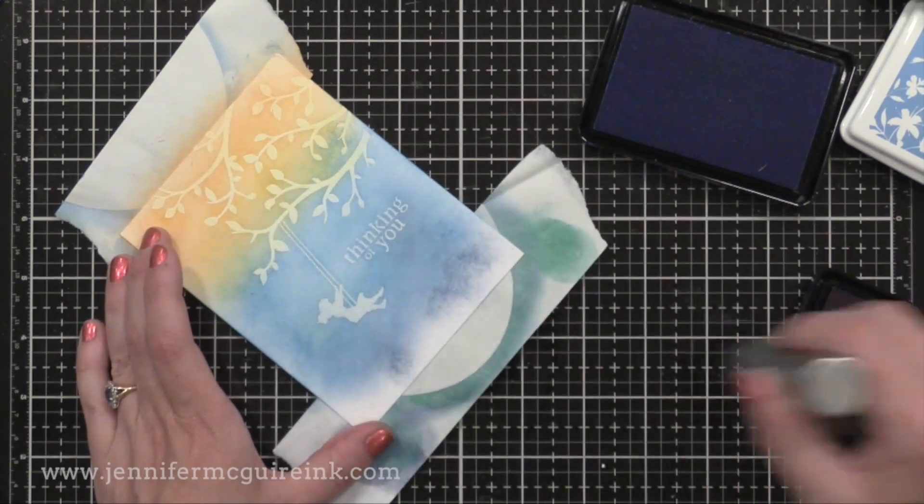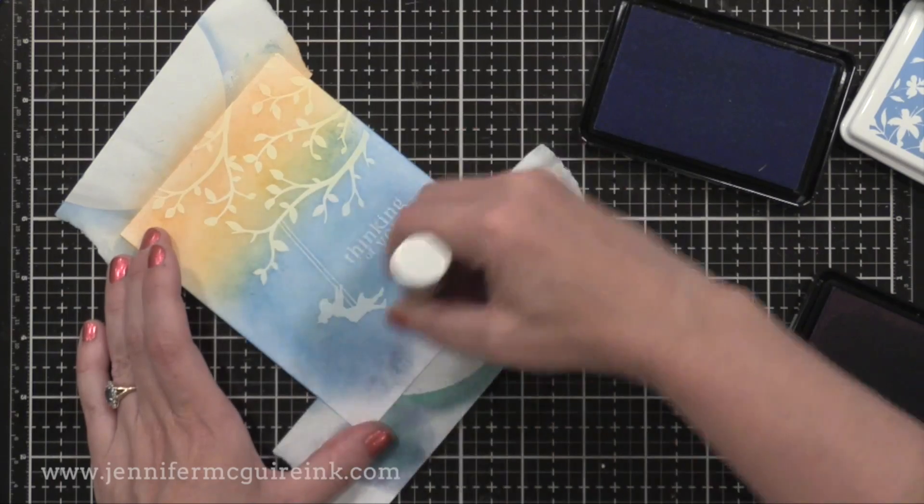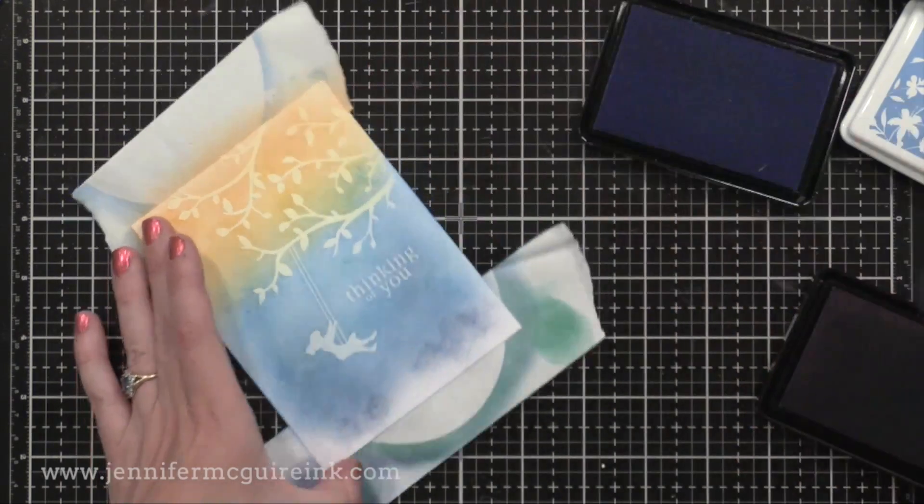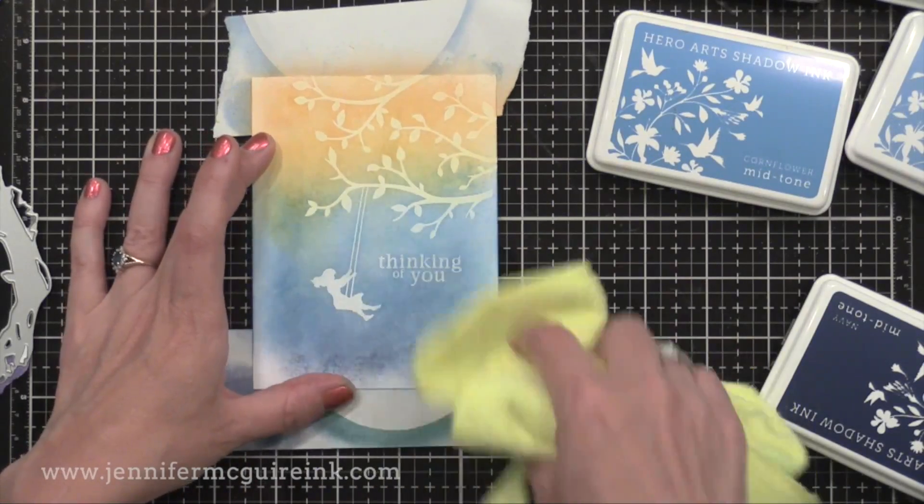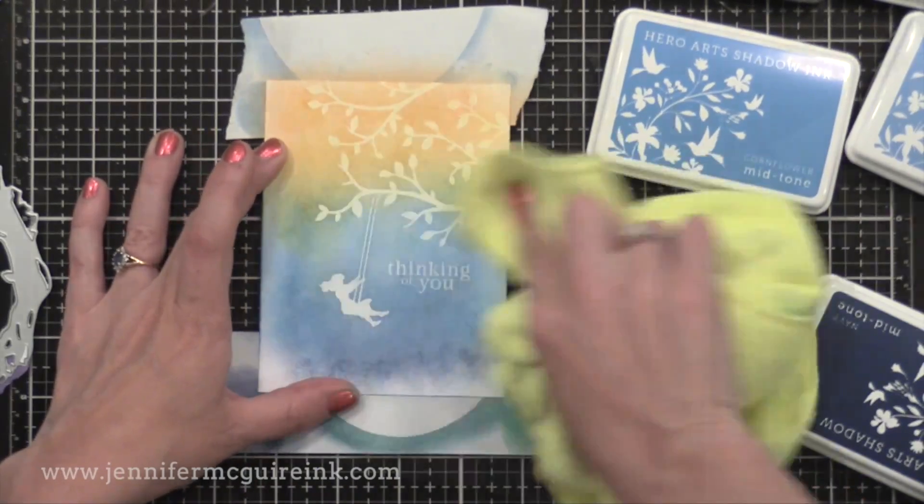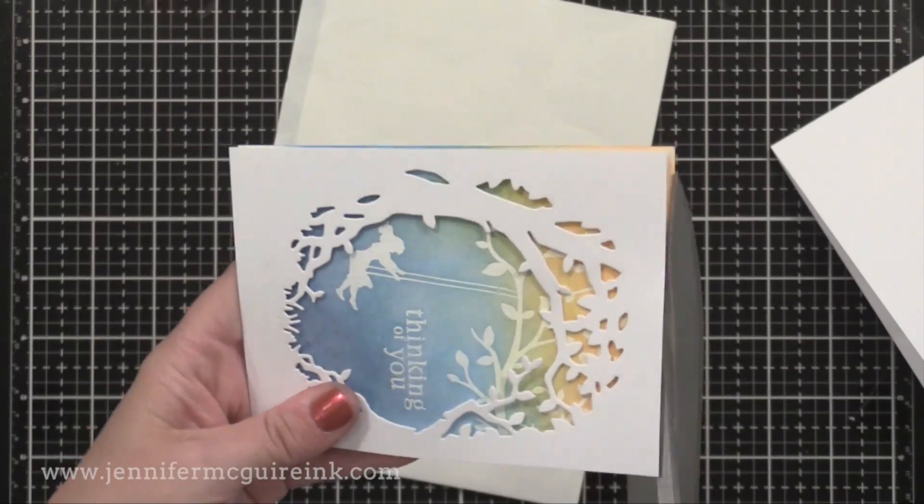So here I've got a soft background. You can see I haven't buffed off the extra ink from that top there. You see how the branches look a little yellow? But when I take the dry cloth to it, it really brightens up that white, and you have a gorgeous resist technique.